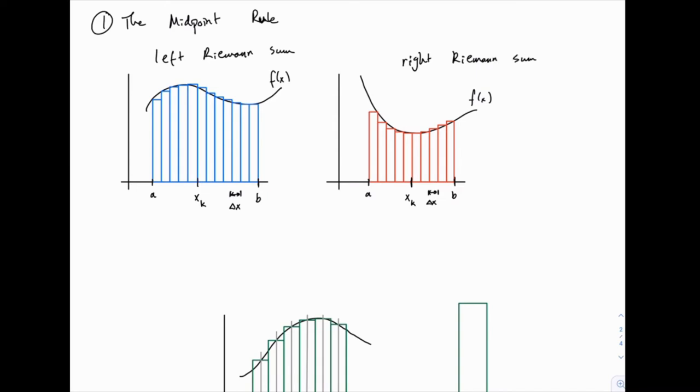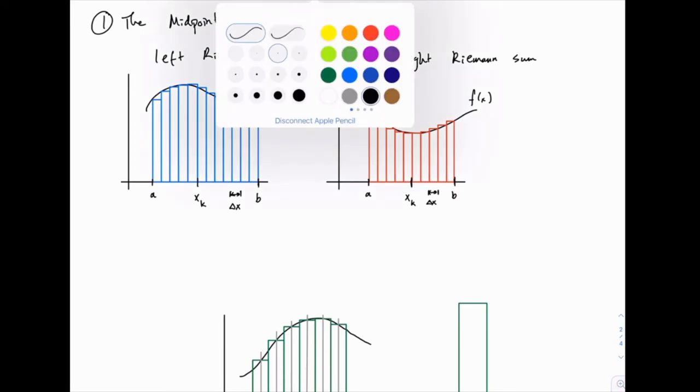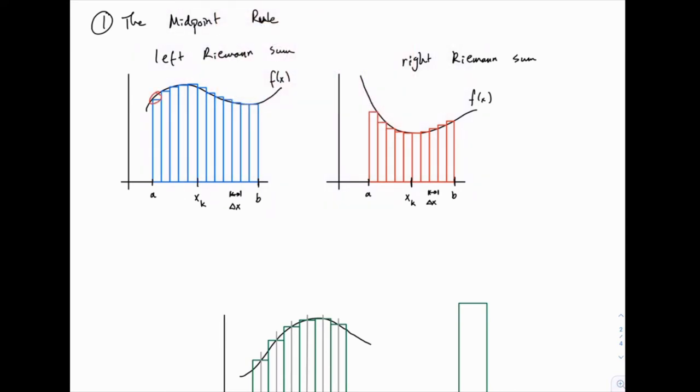And if you take the same function, and you take the left Riemann sum and the right Riemann sum, the left Riemann sum is going to have some rectangles that underestimate the area and some that overestimate. And then the right Riemann sum generally will flip that and have other ones underestimate or overestimate.